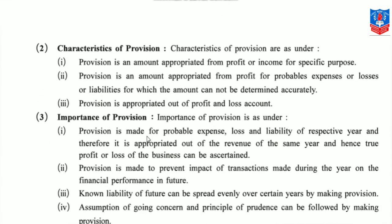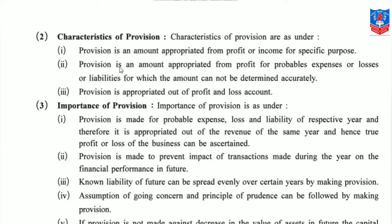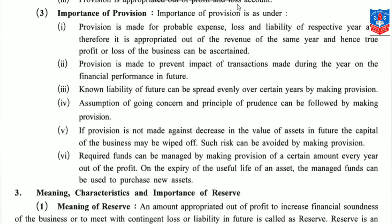Moving further — what are the characteristics of provisions? Provision is an amount appropriated from profit or income for a specific purpose. That specific-purpose money set aside from profit is your provision. Provision is made for probable expenses or losses or liabilities for which the amount cannot be determined accurately. Provision is appropriated out of the profit and loss account — from the profit and loss account we create provisions.